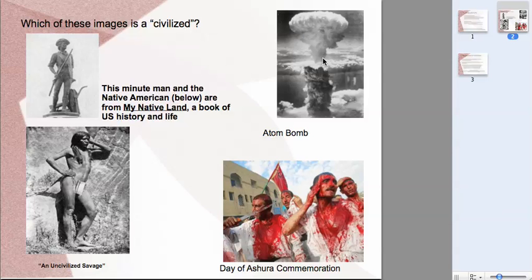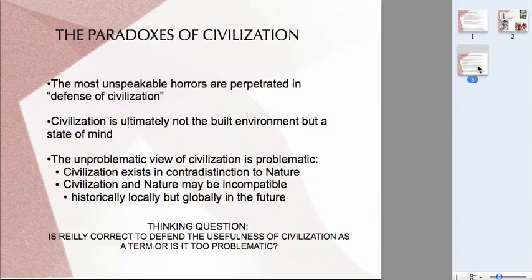On the right here are two images. One of the atom bombs dropped in Japan during World War II, and another showing the commemoration of the Day of Ashura, which is a day commemorating a martyrdom in Shia Islam. Which of these two images would you describe as civilized? By the same token, here on the left are some images from a 1903 book on American history and life — contrast the Minuteman statue on the top with what the author described as an uncivilized savage, this Native American fellow. Again, which of these two is civilized, and why do you think one is civilized and the other is not?